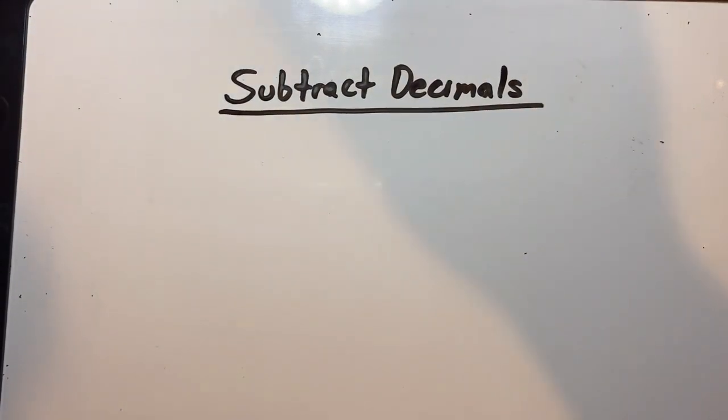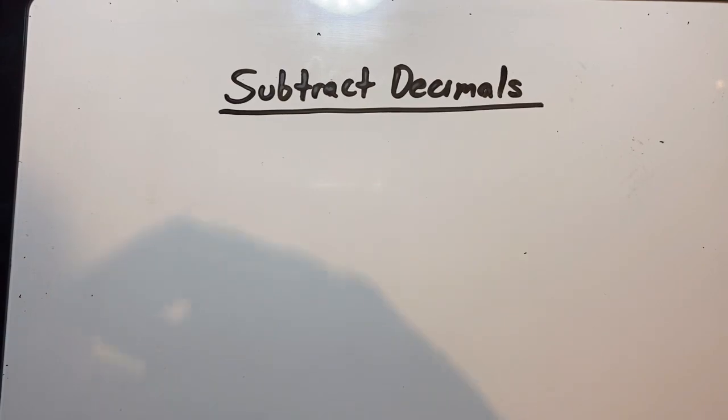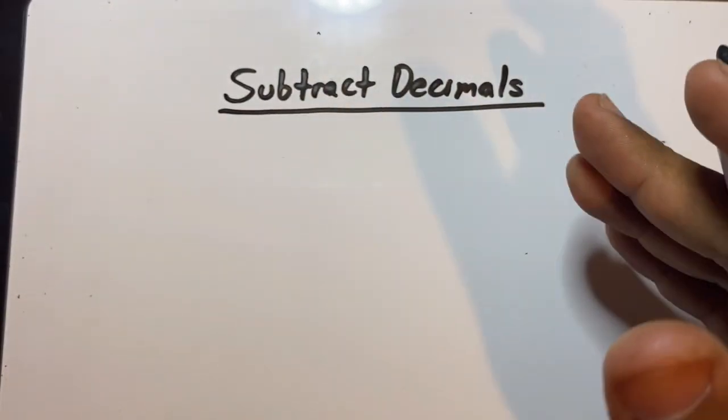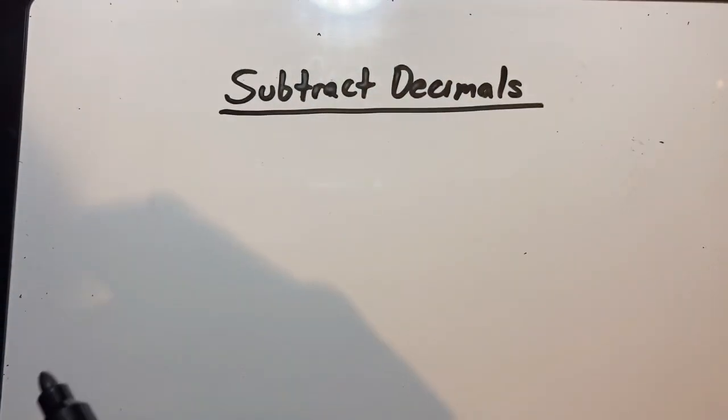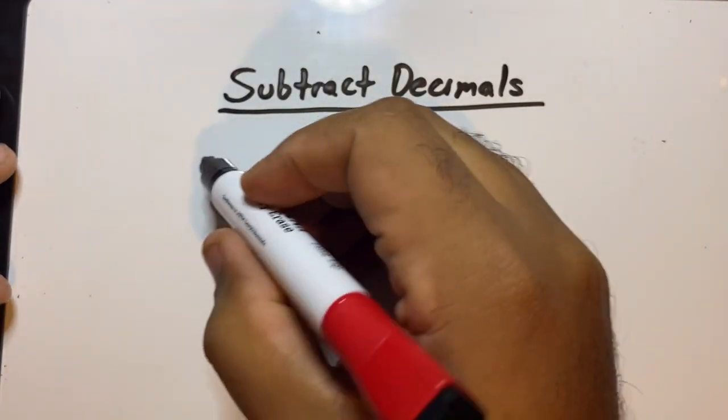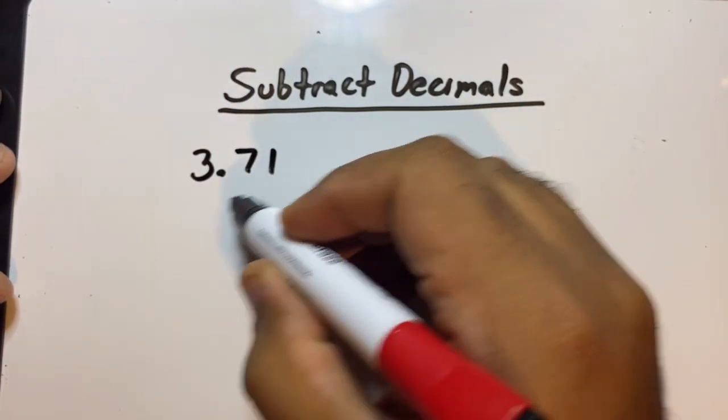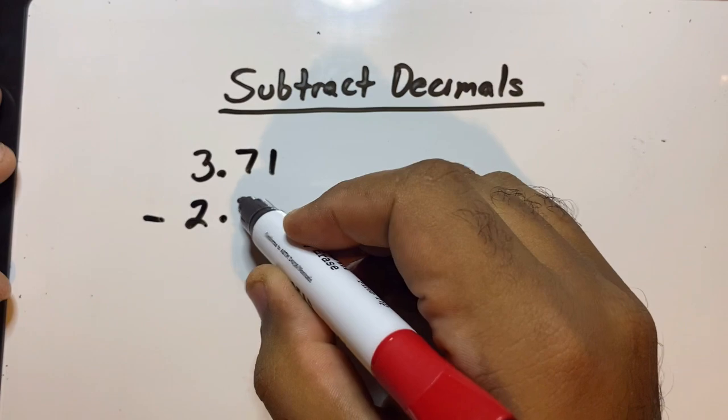Okay kiddos, it's Mr. V again. Welcome to subtracting decimals. Just like we did in the other video, the key to decimals, especially when it comes to addition and subtraction, is aligning the decimal points. So we'll do 3.71 minus 2.3.